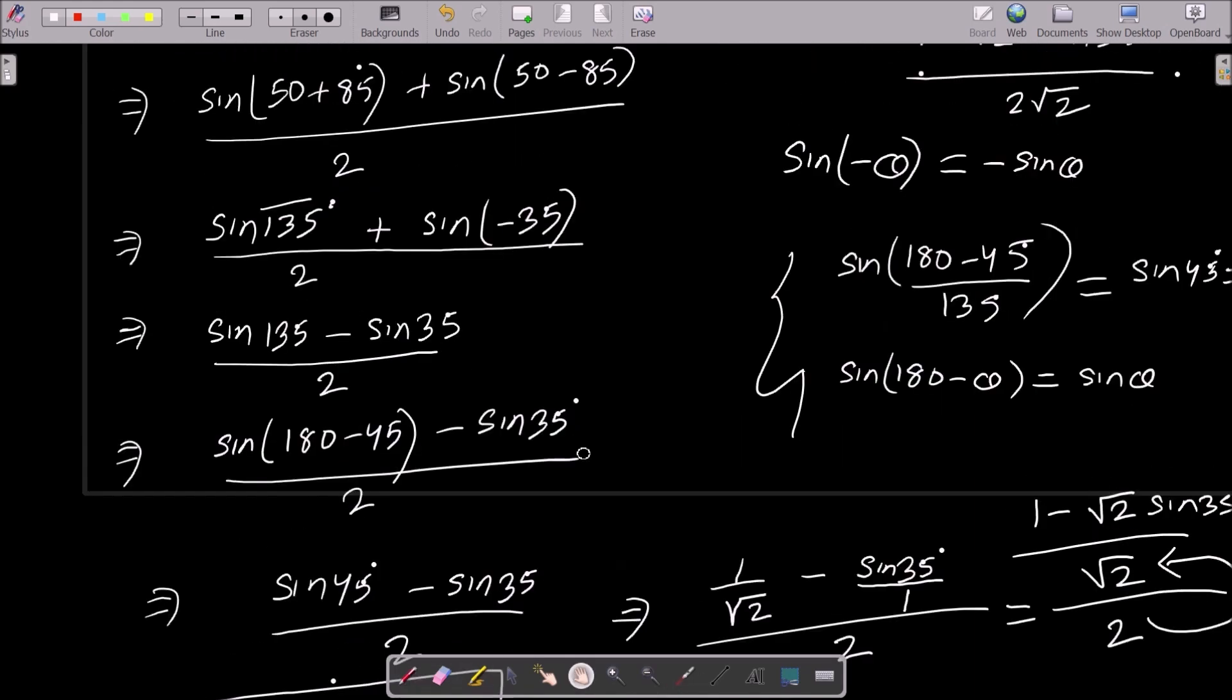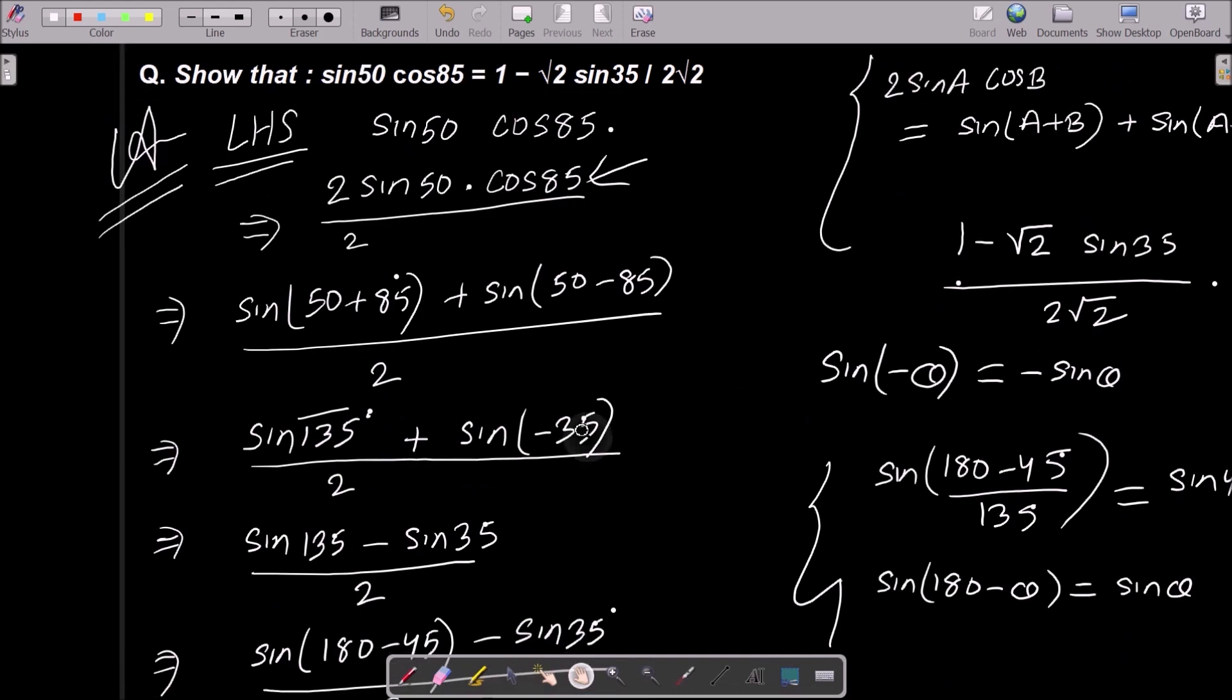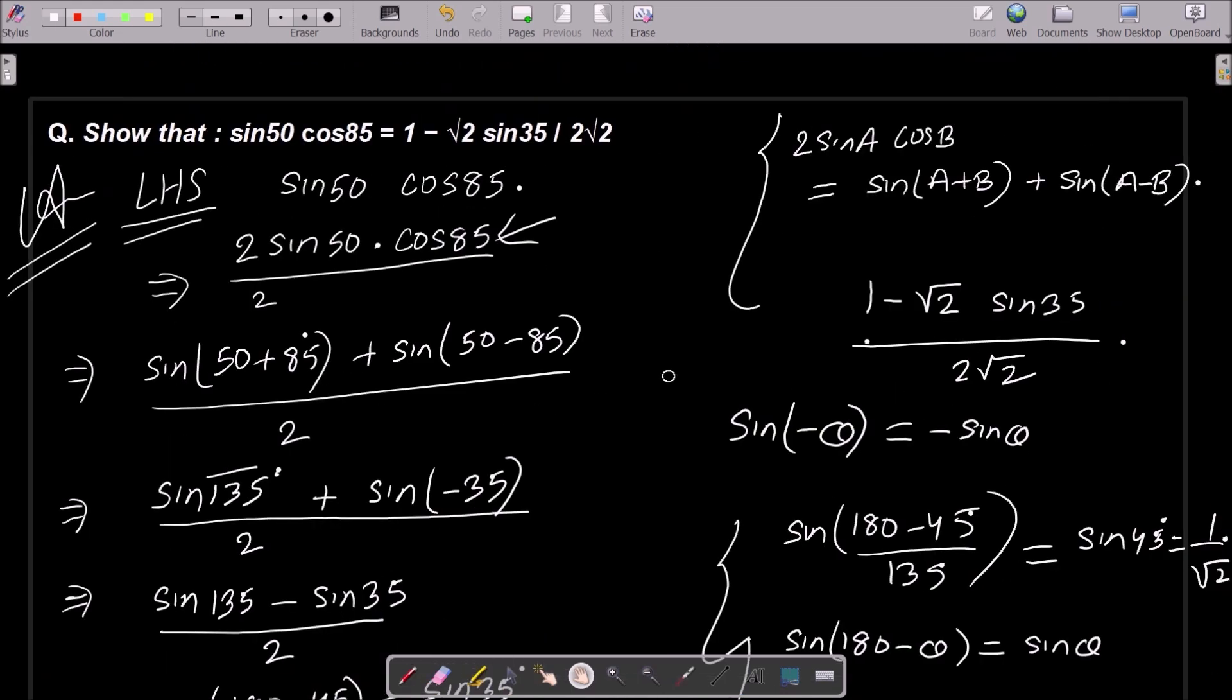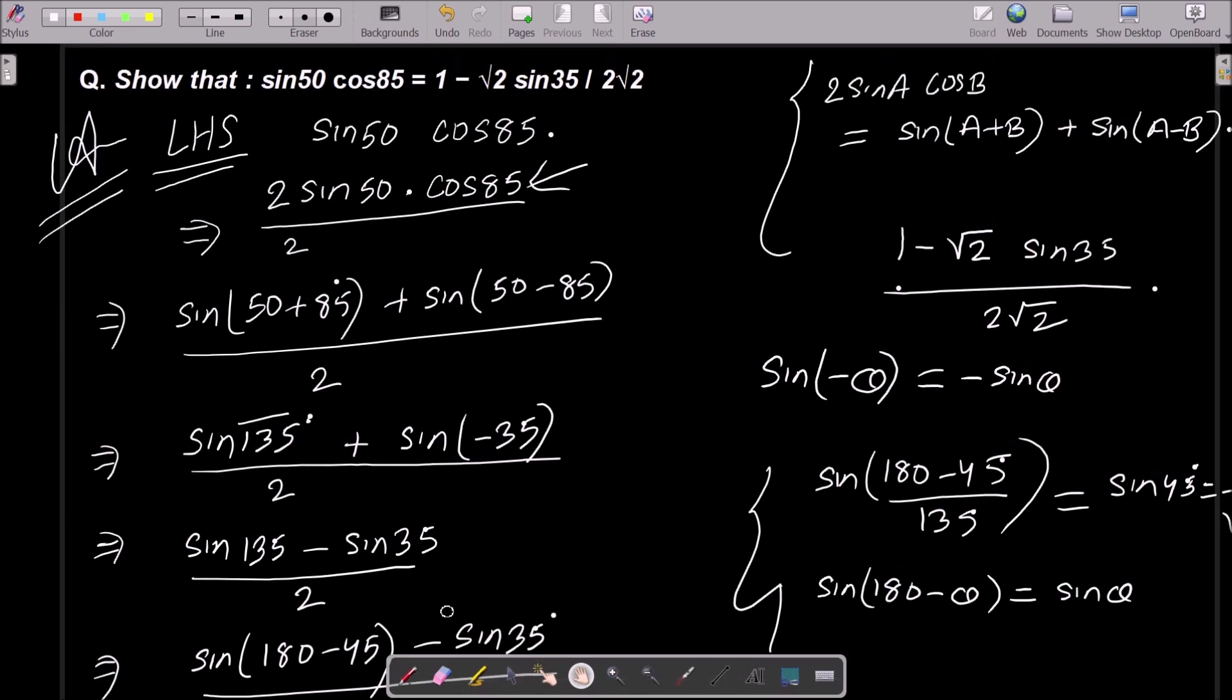So this is the RHS. So this is the most simplest way we can achieve the output by taking the LHS. So one time going to repeat this all. So take the LHS, then multiply with the 2, then apply this formula. This formula you need to apply 2 sin A into cos B.